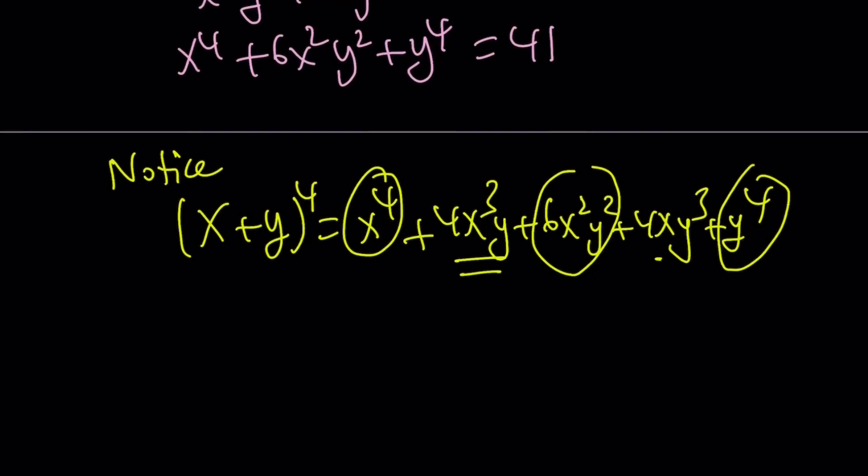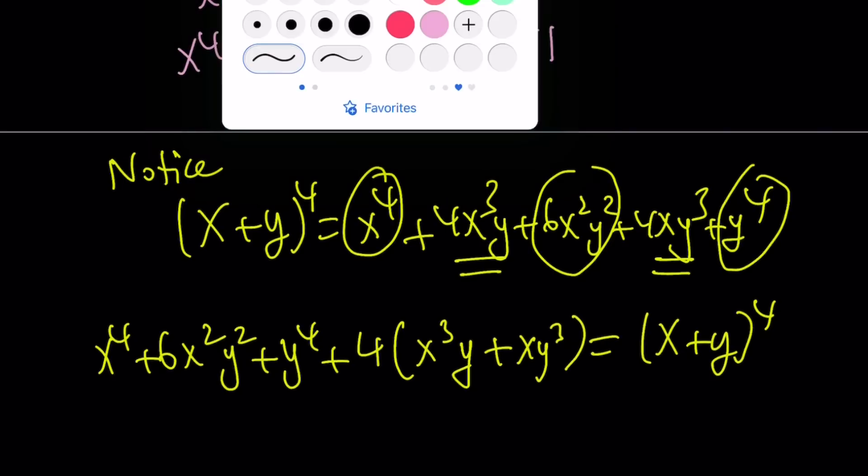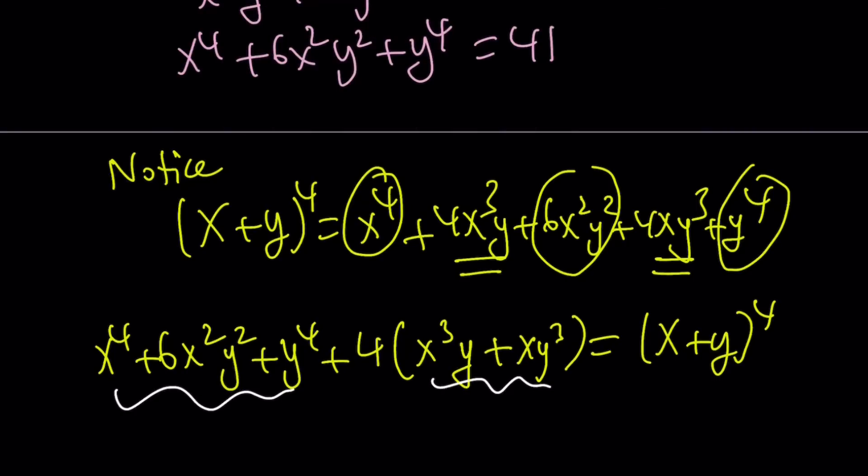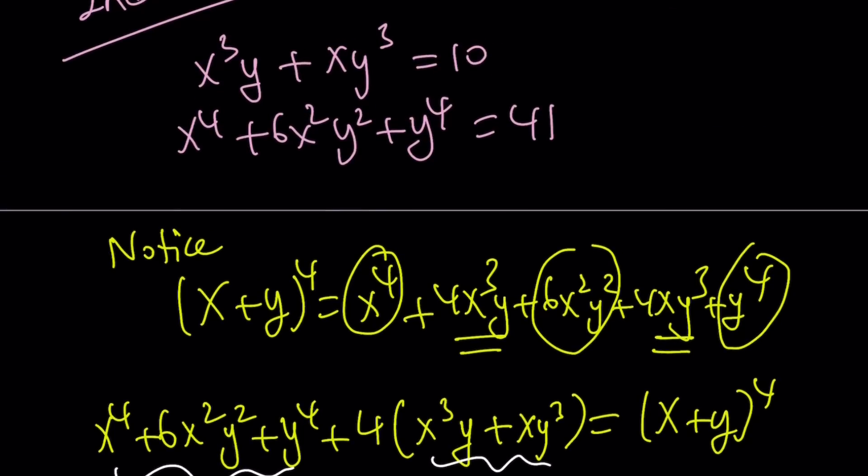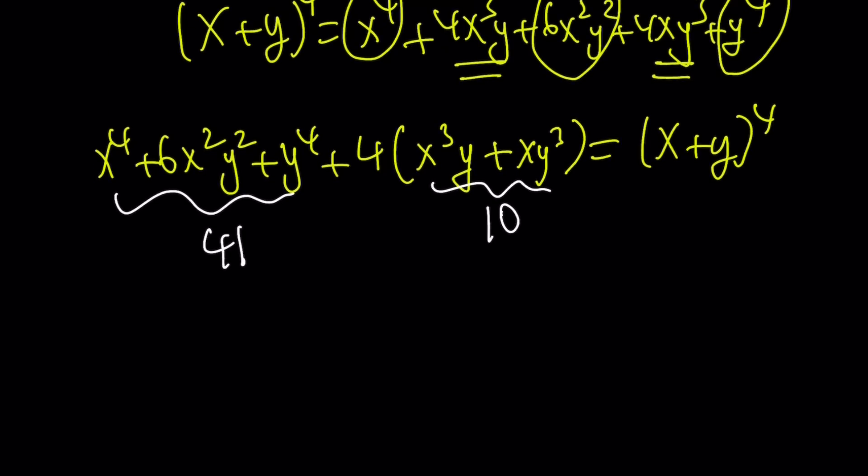So, we notice that these two terms appear with a coefficient of 4, but that can be easily taken care of. So, what am I trying to say? This is what I'm trying to say. We know the value of x to the fourth plus 6x squared y squared plus y to the fourth. And then we can take out a 4 here and write this as 4 times the quantity x cubed y plus xy cubed. Now, remember, this is x plus y to the fourth power, but we do know the value of this and that. So, we can substitute. What is that equal to? The x to the fourth stuff is 41. So, this is 41. And this is 10 because it's given by the equation. So, we kind of take a system and turn it into a single equation.